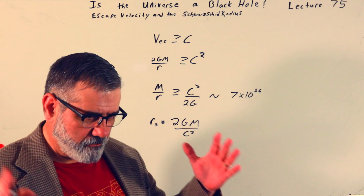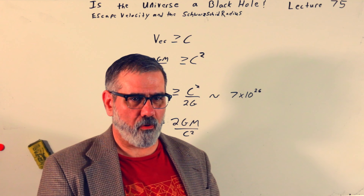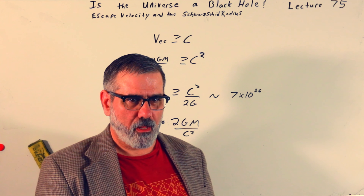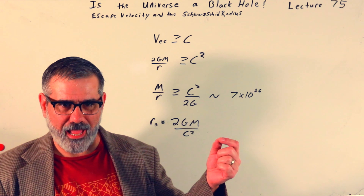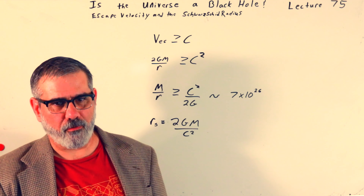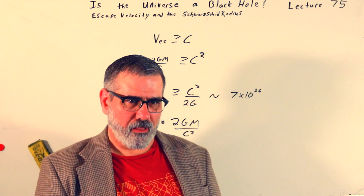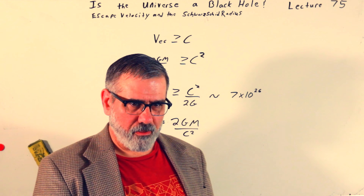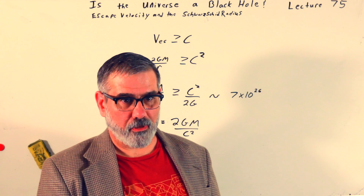We define R_S, the Schwarzschild radius, as the point where the escape velocity equals c. Setting them equal: R_S = 2GM/c². This is also called the event horizon for a black hole. It's the point of no return — if you get closer to the black hole than this, you're never coming out. Not even light can escape, and if light can't escape, nothing can.